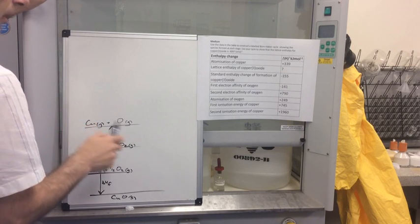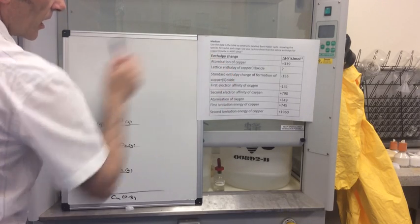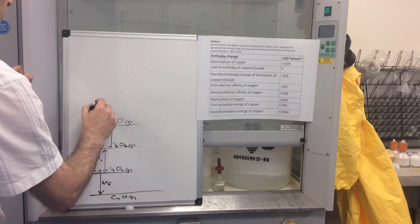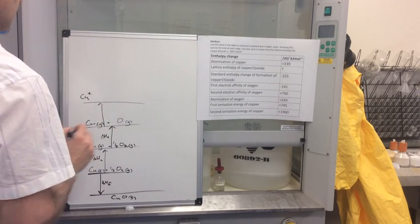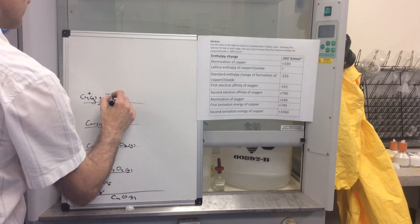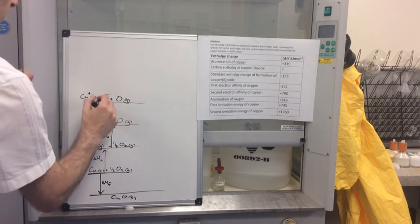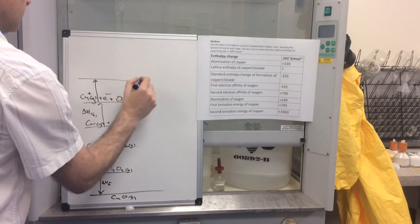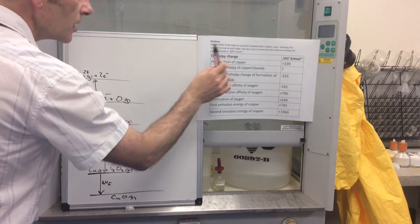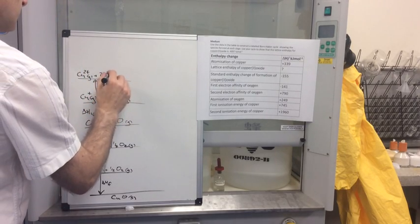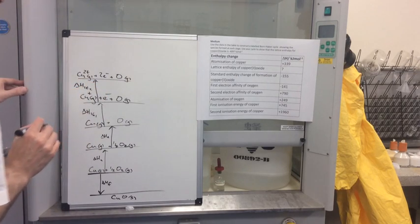This is where this question becomes more difficult than the previous one. If we look at the copper, you can see there are actually two ionization energies for copper — we're forming copper(II) oxide, so it's the Cu²⁺ ions involved. The first ionization energy gives Cu⁺ gas with one electron removed, oxygen still the same — that's delta H IE1. Then we remove the second electron — second ionization energy — giving Cu²⁺ gas with two electrons. That's delta H IE2.